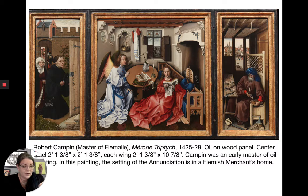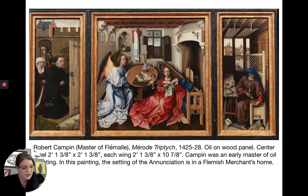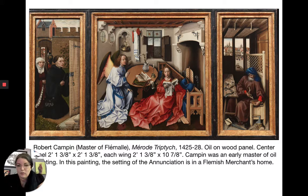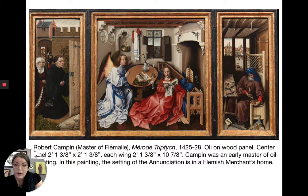The Master of Flémalle, now identified as Robert Campen, was one of the greatest Flemish painters of his time. His most famous work is the Mérode Altarpiece, a triptych produced for a private patron intended for household prayer. This is a shift — previously, large altarpiece triptychs were in churches. This one is quite small, about two feet by two feet in the center panel, representing a new demand for personal devotional pieces.